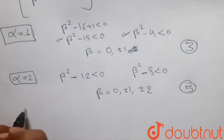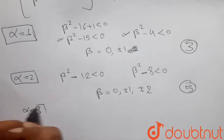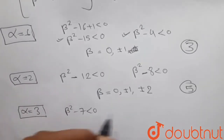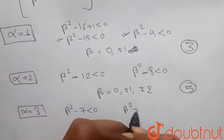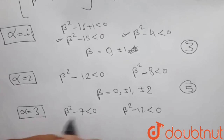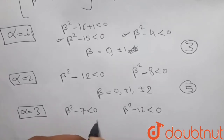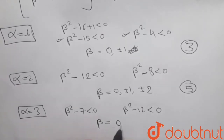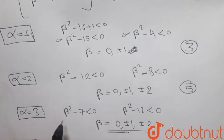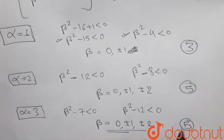If α = 3, then the circle condition becomes β² - 7 < 0 and the parabola condition becomes β² - 12 < 0. From both conditions, β can be 0, ±1, and ±2, since β = 3 would not satisfy the first condition. So for α = 3, we again get five values of β.